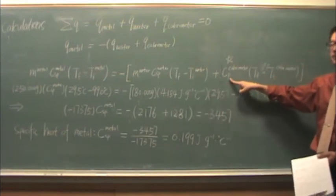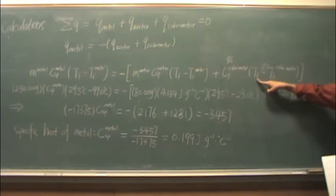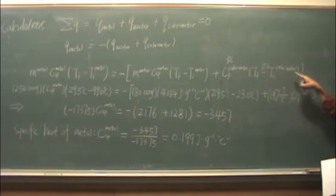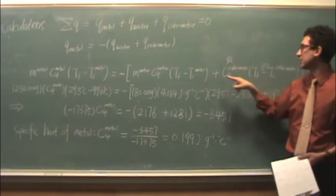Plus cp of the calorimeter, t final minus the initial of the calorimeter. Remember, these two t initials are the same.